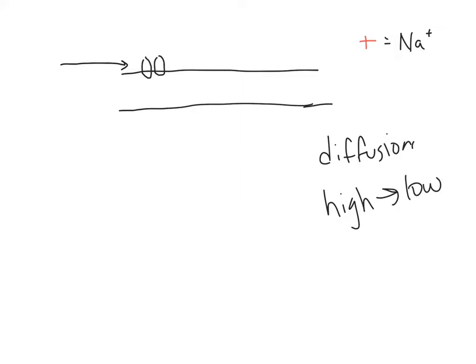Regular diffusion — like if you sprayed perfume in class, people around you would smell it instantly. Eventually it would spread out. That is diffusion: your perfume moving from high concentration on you towards low concentration, all by itself. Facilitated diffusion is the same thing — goes from high to low concentration — but it needs a protein channel.